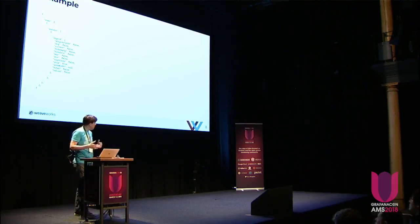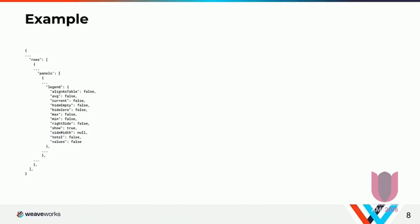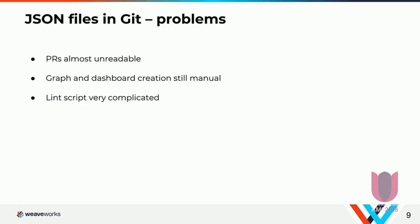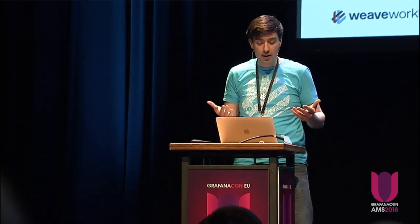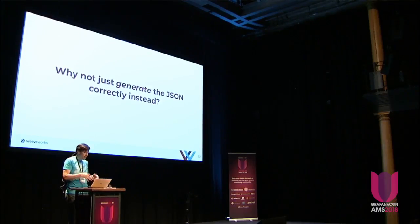The JSON — many of you will have seen this — but the JSON looks a little bit like this. It's a big file full of lots of features. At Weaveworks, for our internal dashboards, we don't set legend ever. But each PR and each dashboard file, you know, we have to look through all this legend stuff, and we're just quite content with the defaults. So the problems with having the JSON files in Git were that you'd have these huge PRs, and they're very difficult to reason about, because you've got all these defaults that just don't really matter. And the process of creating dashboards and graphs was still quite manual — we'd go to the UI, do some things, export, put in the thing. And our lint script grew ever more complicated as we came up with new rules, like 500 errors should be shown in red. So we thought, if it's so hard to check that the JSON's right, why not just generate it correctly in the first place?